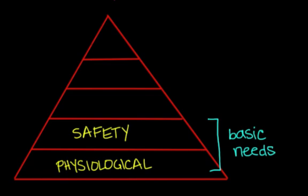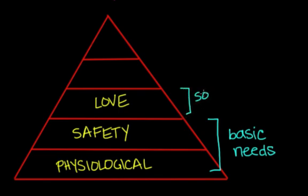Maslow went on to name a third level, and this is our level of love — our need for love. It's our need to belong, our need to have acceptance from friends and family, and our need for intimacy. This level of needs is called our social needs.